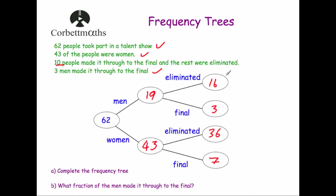To check our answer, we add up the numbers: 16 plus 3 is 19 — correct. 36 plus 7 is 43 — correct. And 19 plus 43 gives us 60, so all the numbers make sense.